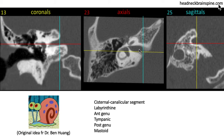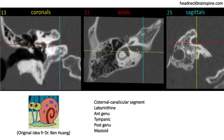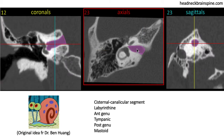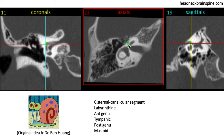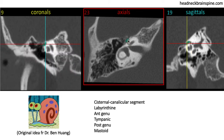Let's trace the segments just as we learned in the previous videos. We'll focus first on the axial slices, starting at the level of the IAC — the labyrinthine segment — then the anterior genu, which synapses on the geniculate ganglion.